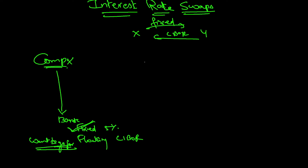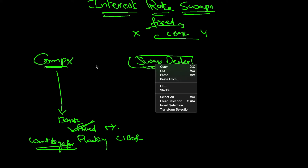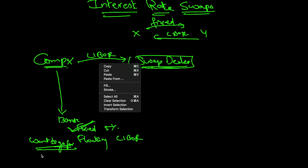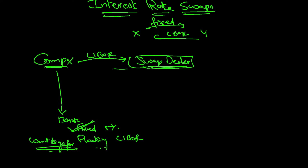So they agree to pay fixed rate at 5%. Why do they do this? After doing this transaction, they will enter into an interest rate swap with a swap dealer — typically an investment bank plays the role of swap dealer. The interest rate swap agreement goes like this: Company X will pay LIBOR to the swap dealer, which is what they wanted to pay.